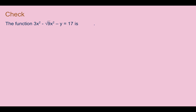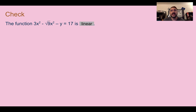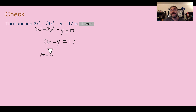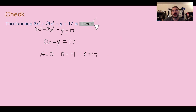Check your understanding: is the function shown linear or nonlinear? The square root of 9 is 3, so we get 3x² − 3x² − y = 17. Those cancel out, leaving -y = 17. There are no x's, so writing 0x, we're in the form ax + by = c with a = 0, b = -1, c = 17. They have no greatest common factor other than 1, so we are in standard form — this is linear. You could also type it into Desmos and see it gives a straight line.